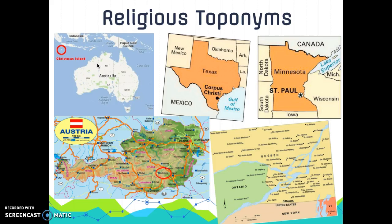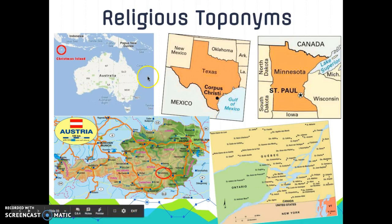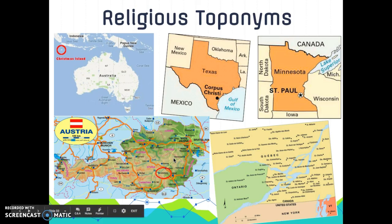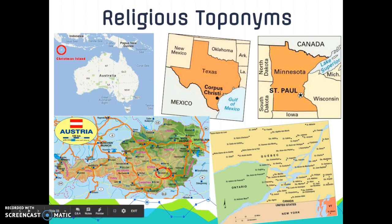Our next topic is toponyms — remember, a toponym is just a place's name. For Catholic examples, we see a lot of places named after saints, such as Quebec, St. Paul Minnesota, and Corpus Christi, Texas — which is Latin for 'body of Christ.' We also see the Christmas Islands off of Australia. Another example is Judenburg, which translates to 'Jew's town,' and places called Judenburg can be found across Europe.